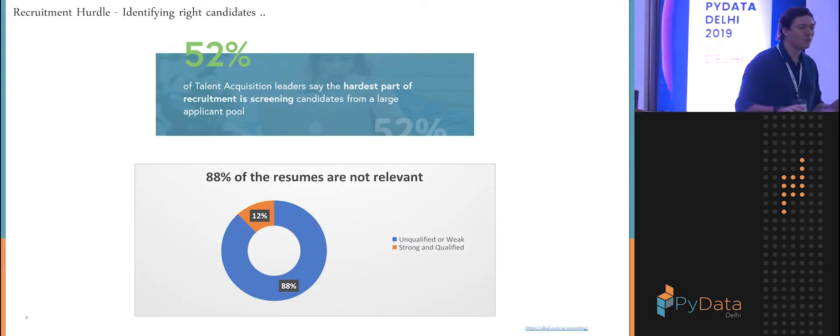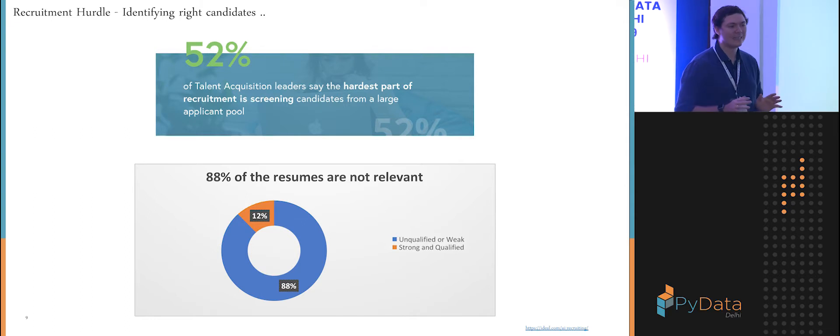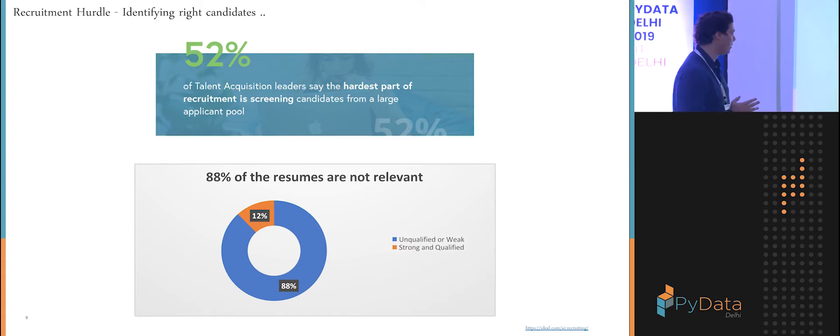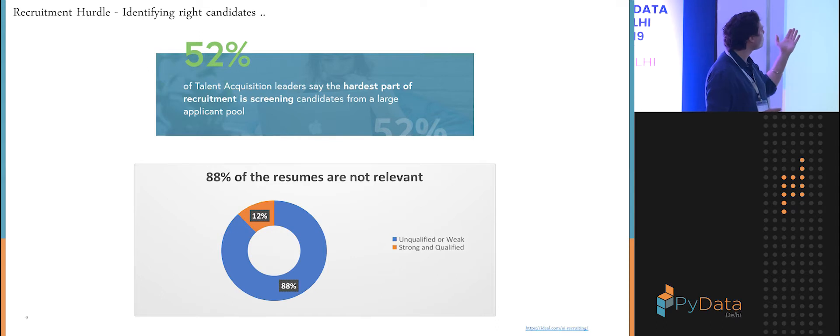Anybody who's done any recruiting knows that it's not the most exciting process for a manager. It usually takes a lot of time, and you're not even guaranteed to find exactly the profile you are looking for. So it's not an unknown problem. I found this: 52% of people saying the hardest part is to screen all the candidates. For instance, I know for my role when I applied in London, there were over 100 people who applied. Imagine the time that the recruiters have to spend just going through all the CVs.